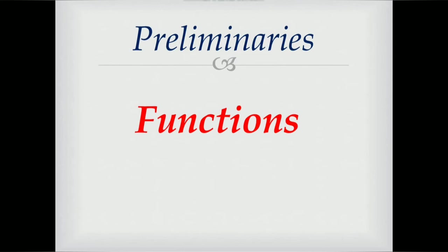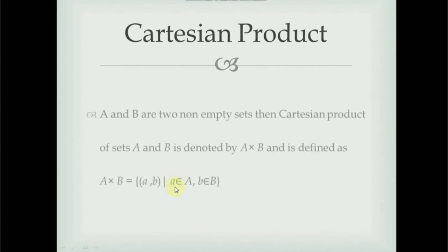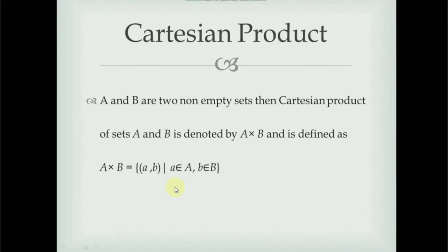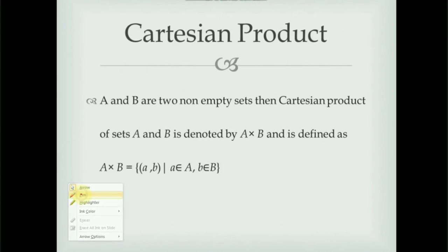First, we will see what is meant by the Cartesian product of two sets. If A and B are two non-empty sets, then the Cartesian product of sets A and B is denoted by A cross B and is defined as A cross B equals the set of all ordered pairs (a, b) where a belongs to set A and b belongs to set B. That is, the Cartesian product is the collection of all possible ordered pairs.